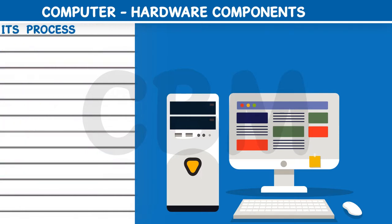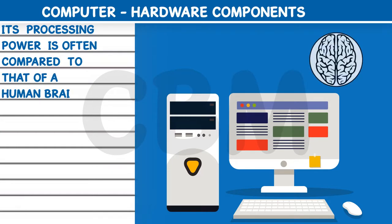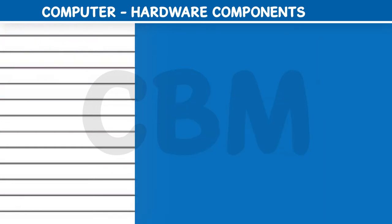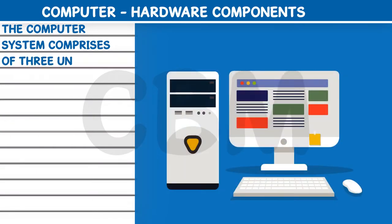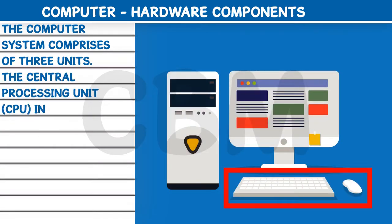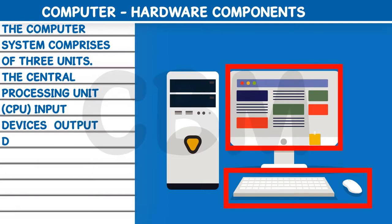Its processing power is often compared to that of a human brain. The computer system comprises three units: processing unit, input devices, and output devices.